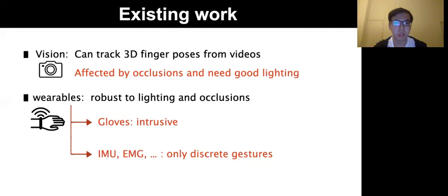For other sensors like IMU, EMG, and flex sensors, existing work only explores classifications on discrete gestures without providing free-form 3D pose tracking for arbitrary hand motion.